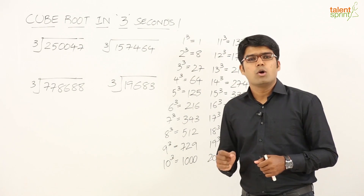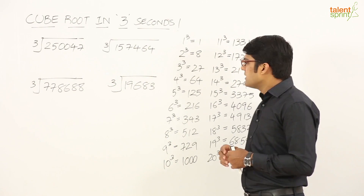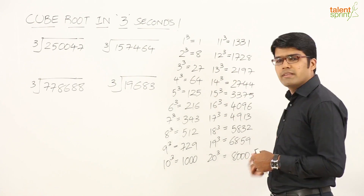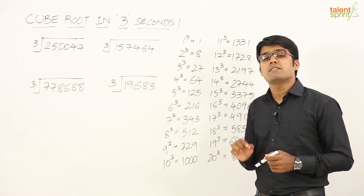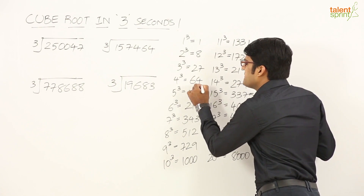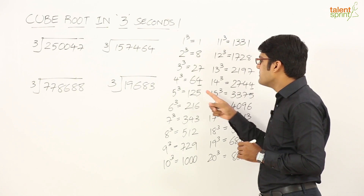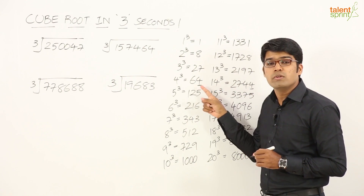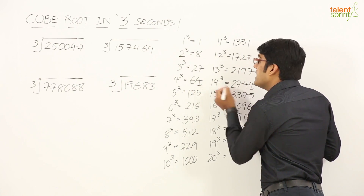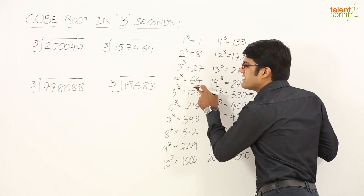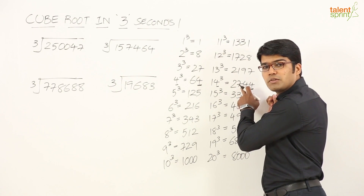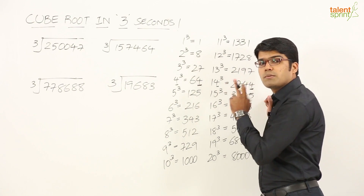But before we do that, let us understand the units place pattern when it comes to cubes of some numbers. Here I have listed down the cubes of the first 20 natural numbers — one to twenty along with their cubes. Try to observe the units place pattern. For example, 64 and 2744 are numbers that end in 4. The point to be noted is when a cube ends in 4, its cube root will also end in 4. The cube root of 64 is 4, and the cube root of 2744 is 14.